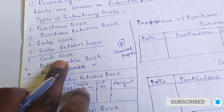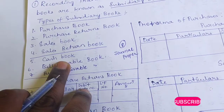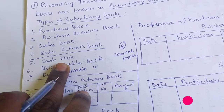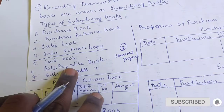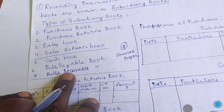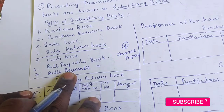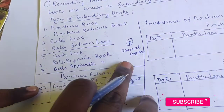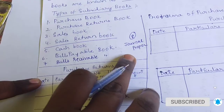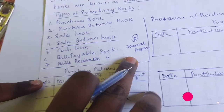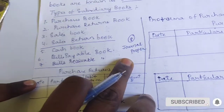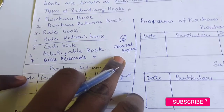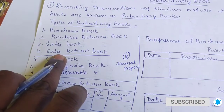The cash book is a separate chapter — it is part of subsidiary books, and I will cover its details separately. Next are the bills payable book and bills receivable book. These 2 books are not so important from an examination point of view. Finally, the last one is journal proper, which is also a separate chapter. For now, let us focus on these 4 important books.